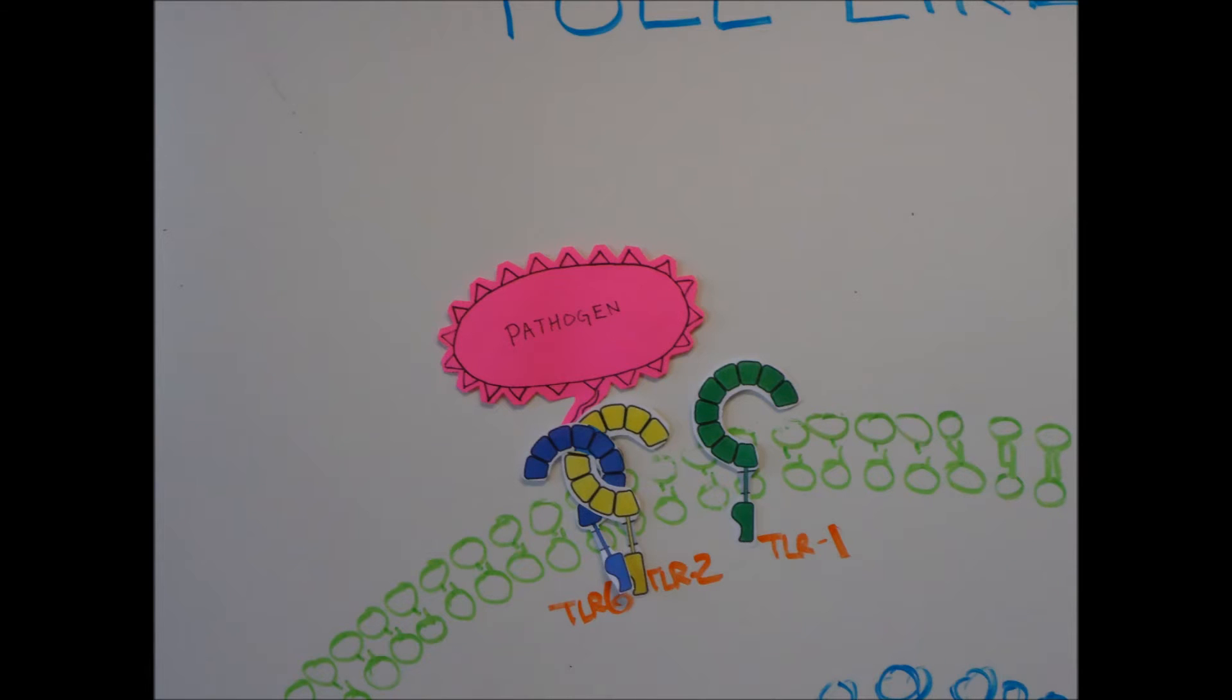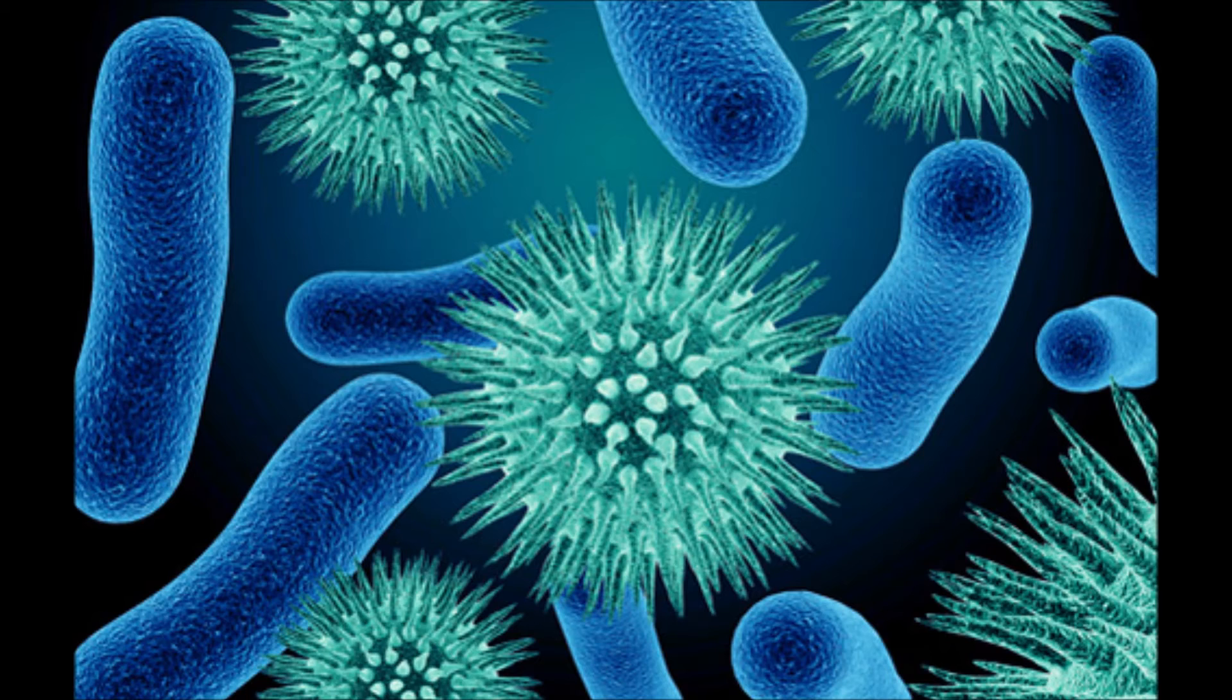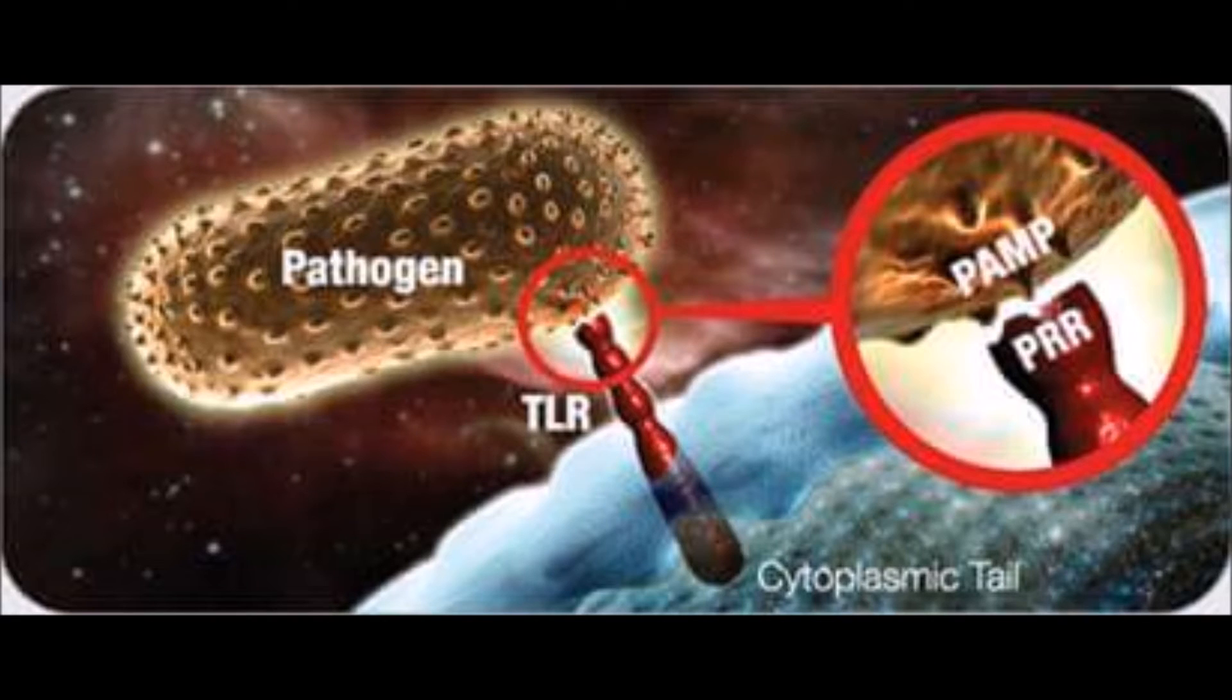The ligands that bind to TLR2 to activate it consist of several different types of PAMPs found on the surface of different microorganisms, such as lipopeptides, zymosan, and lipomannans. Each PAMP is specific to different classes of microorganisms.